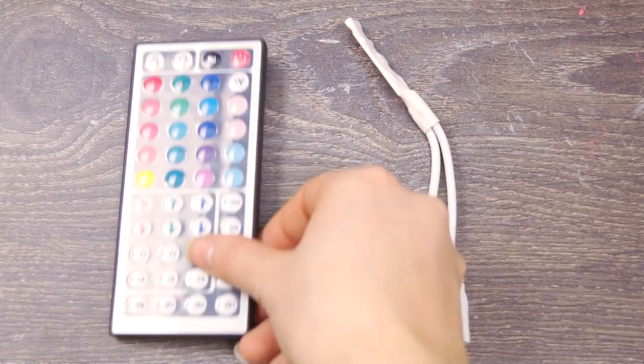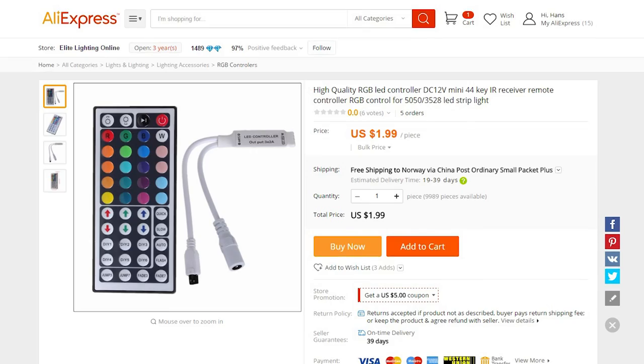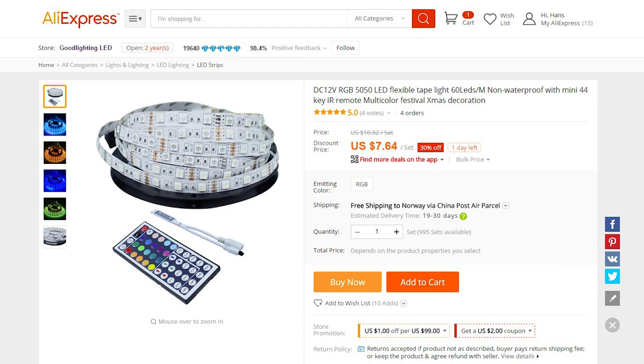The electronics are actually really simple. We mainly need an LED controller that we can use to change the color and the lighting effects, and an RGB LED strip.